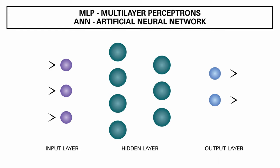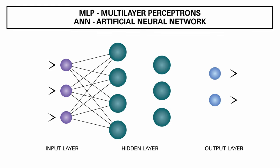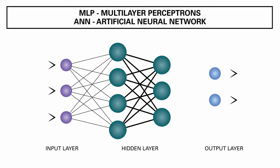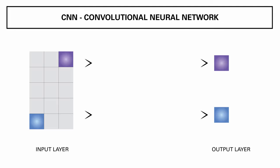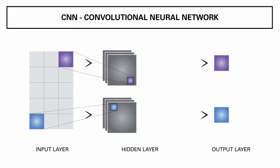MLP, or multi-layer perceptron, is also called ANN or artificial neural network. The algorithm takes data in a tabular form and processes it in a sequential, one-directional manner — you feed it input, a hidden layer processes the input, and then you receive an output.